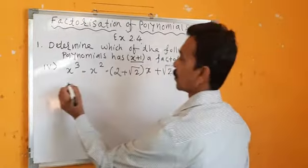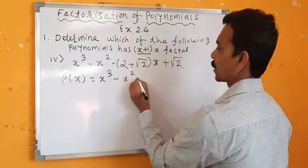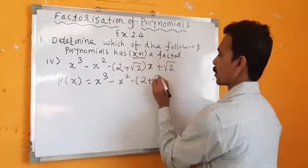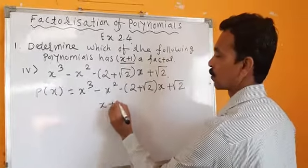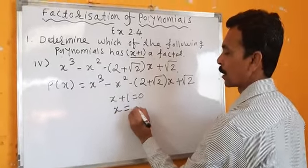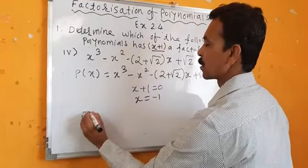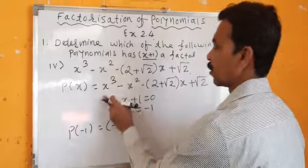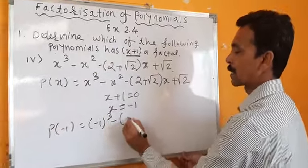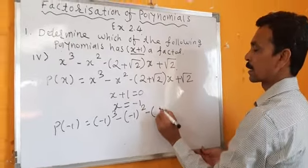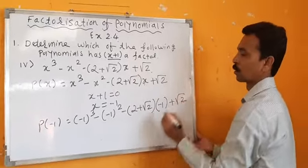Fourth bit: P of x is equal to x cubed minus x squared minus 2 plus root 2 into x plus root 2. x plus 1 equals 0 means x equals minus 1. Place this value in P of x, giving P of minus 1. x cubed means minus 1 whole cube.